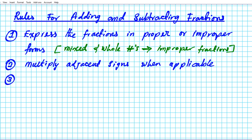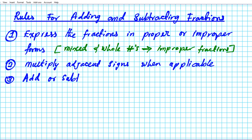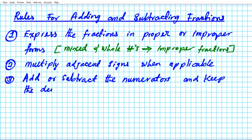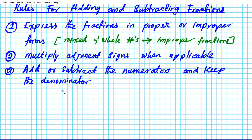Alright, so now you're ready to add. You just proceed to add or subtract the numerators. The reason you can do this is because the denominators are already alike. So add or subtract the numerator and keep the denominator. And then lastly, in certain cases you might have to reduce your result to its simplest form.